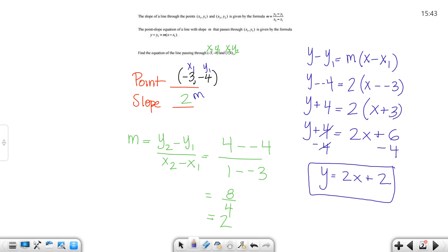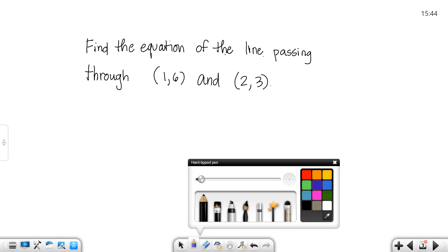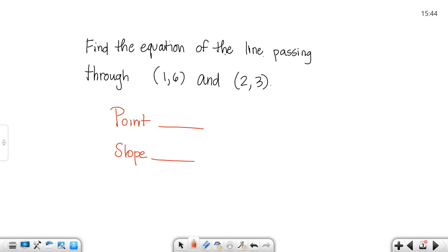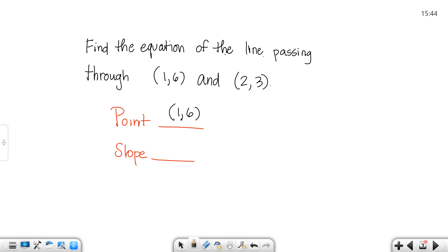I want to find the equation of the line passing through (1, 6) and (2, 3). Okay, in order for me to find the equation of the line, I need to use my point-slope formula. So, I need a point and I need a slope. Okay, you can pick whichever point you want. I'm just going to pick the first one. So, that's going to be (1, 6). But I don't have a slope, so I have to find the slope.